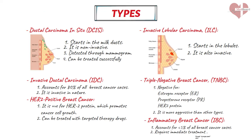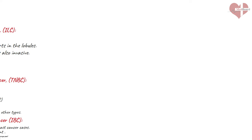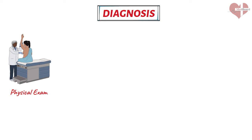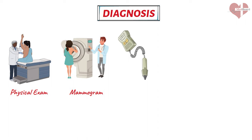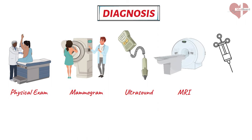It is important to note that these are not the only types of breast cancer, and some breast cancers may have a combination of features from multiple types. Additionally, breast cancer can be classified based on its stage and grade, which can impact treatment options and prognosis. The diagnosis of breast cancer involves a number of steps, including physical examination of the breasts, mammogram, ultrasound, MRI, and biopsy to confirm the presence of cancerous cells.